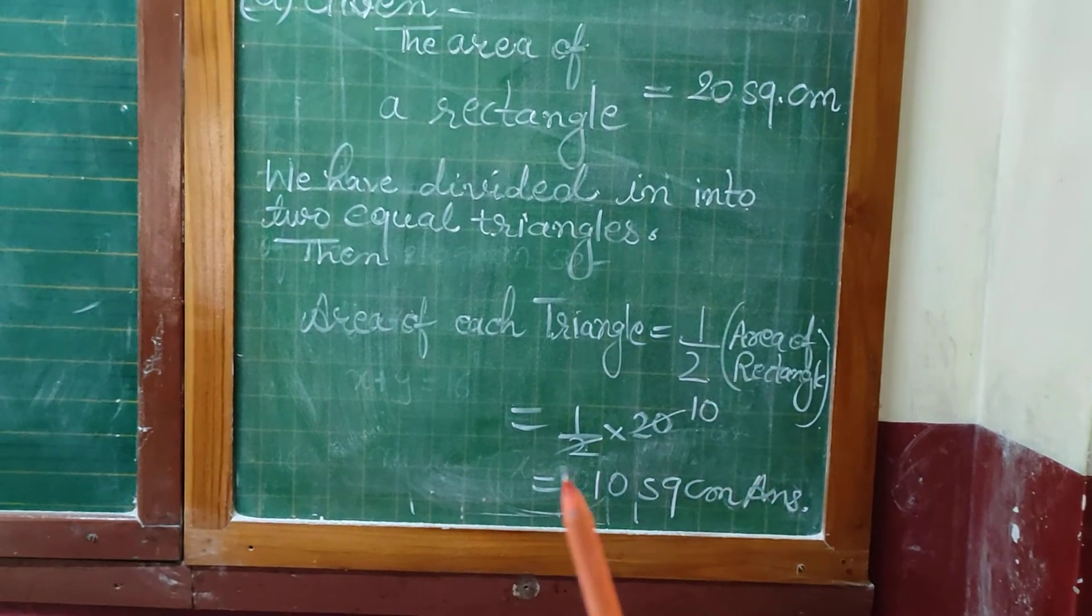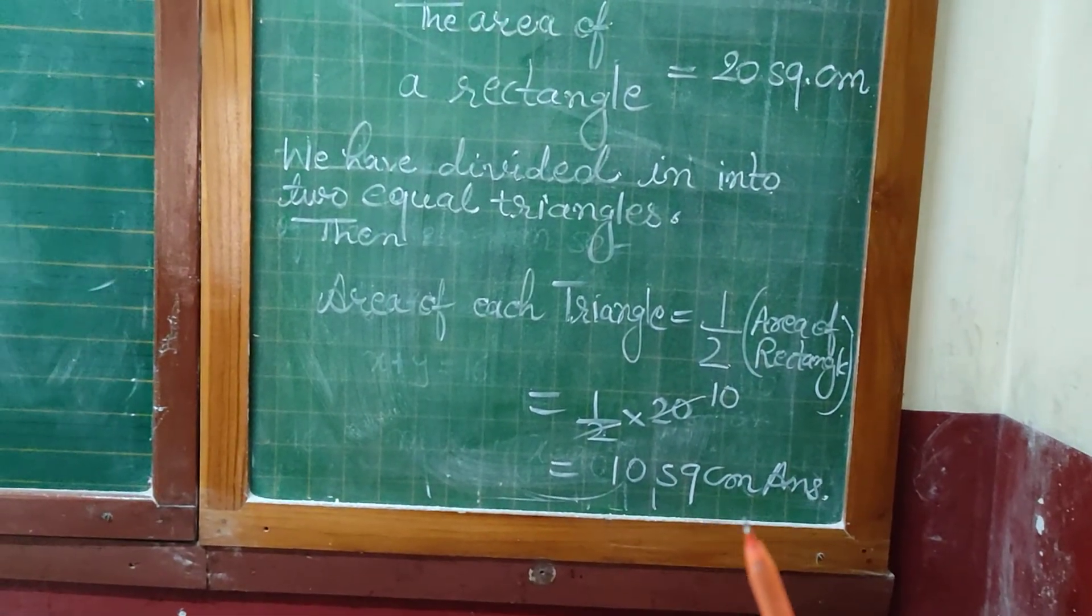Half into 20. So 2 ones are 2, 2 tens are 20. So 10 square centimeters.